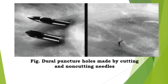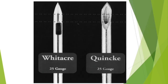The blunt tip needles are similar to pencil point tips. They produce an irregular tear on the dura, and the aperture is on the side of the shaft. They require more force to insert, are less likely to cause PDPH, and produce less amount of tissue coring.